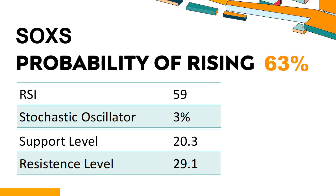The current stochastic oscillator of SOXS is 3%. When the indicator falls below the 20 level, it is usually considered oversold, indicating that a price rebound or recovery is likely for the stock. An oversold condition occurs when the stock price falls too fast and too much in a short period of time, which may indicate that the selling pressure has exhausted.